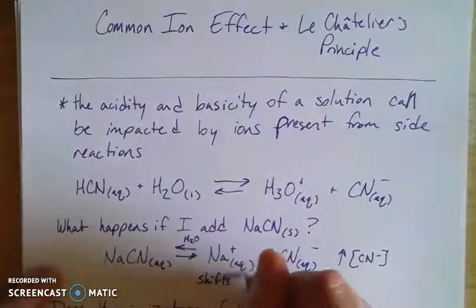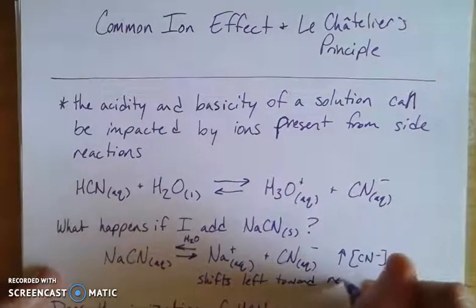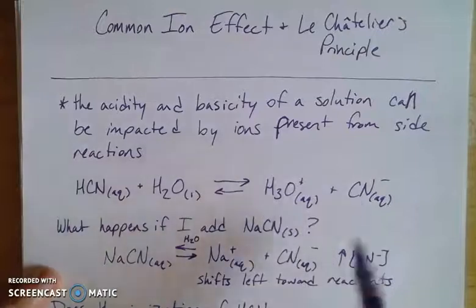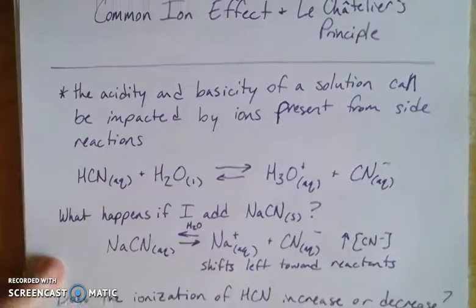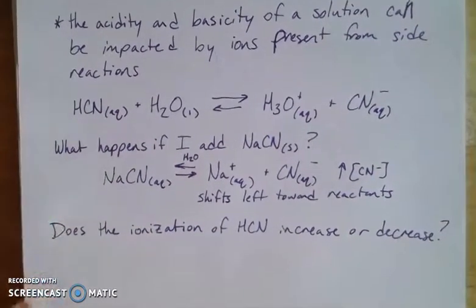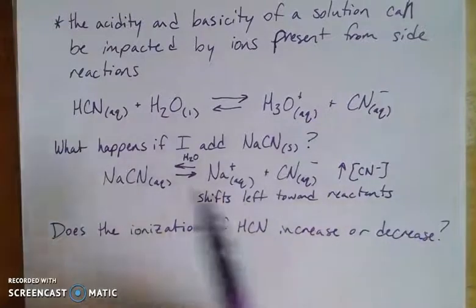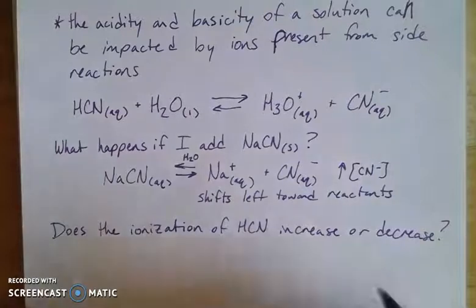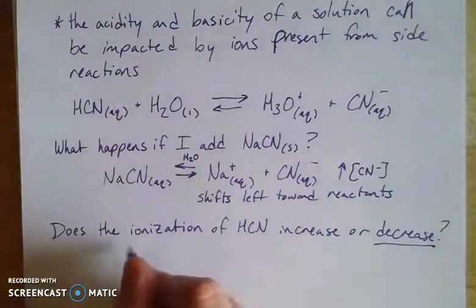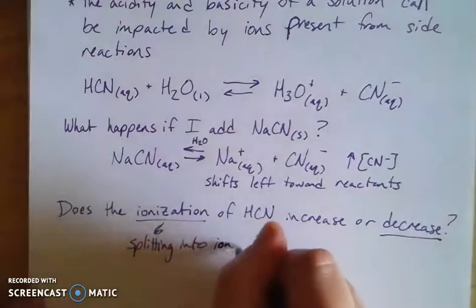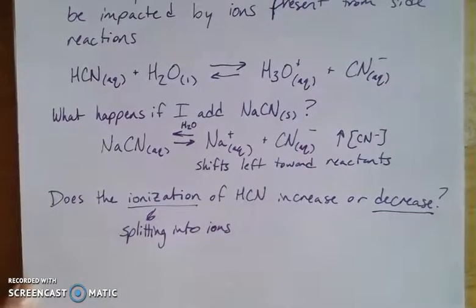So it shifts left towards the reactants, which means I have less hydronium in solution. What does that mean about the ionization of hydrogen cyanide? If it's shifting towards the reactants, I have more HCN in solution, so that means I have less ionization. Ionization — or dissociation — just means splitting into its component ions. So we're ionizing HCN into its component pieces, and this addition of cyanide decreases that ionization.